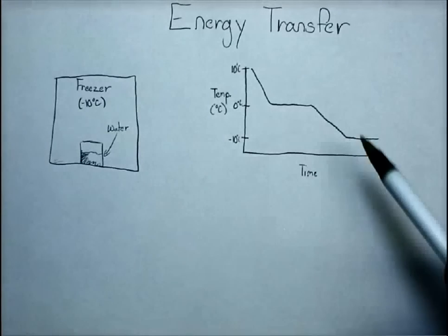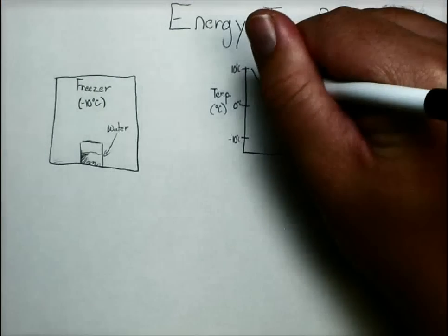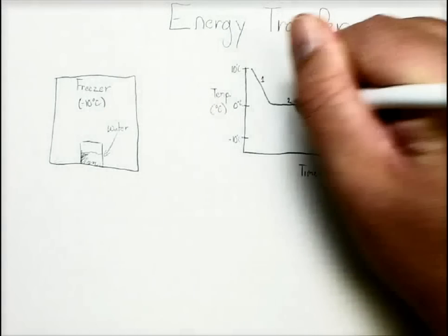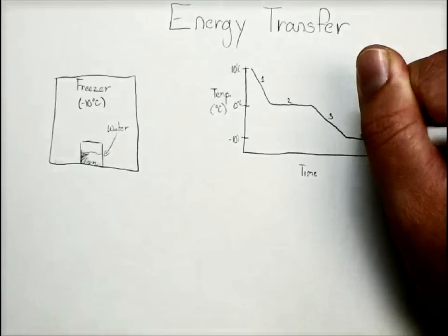Now notice there are different sections of this graph. And I'm just going to number them. So we've got section 1, section 2, section 3, and section 4.